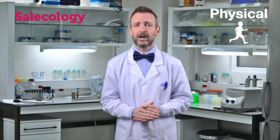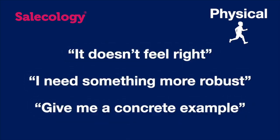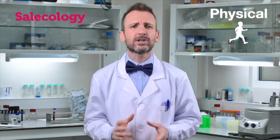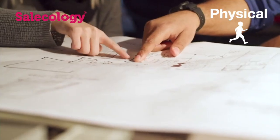The physical operating system loves to touch and feel things, is emotionally charged and therefore wants things to be tangible and real. This operating system uses physical words like 'it doesn't feel right,' 'I need something more robust,' or 'give me a concrete example.' The physical system wants to be hands-on and based on reality. When selling to this preference, you need to get them physically involved to keep it real, utilize case studies for tangible examples and have them print out documentation or send them things in the post to grab their attention.